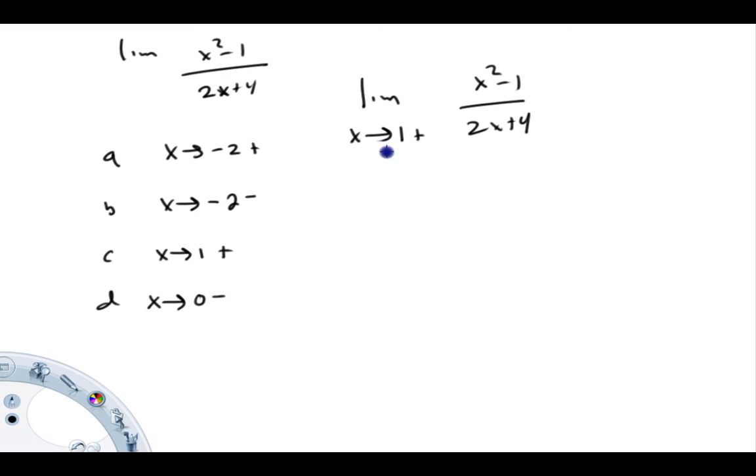And again, just put the value in. See if you get a value out. When we put a plus 1 here, the top of this is going to 0 from 1 squared minus 1. The bottom is going to 6. So the limit is 0. And I see no reason to investigate plus or minus signs here because 0 is 0 is 0. Plus and minus signs don't really matter.